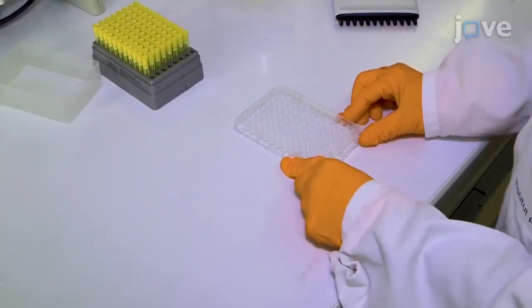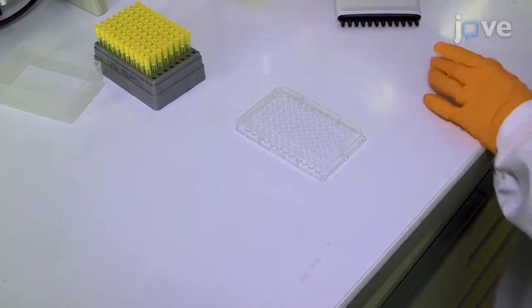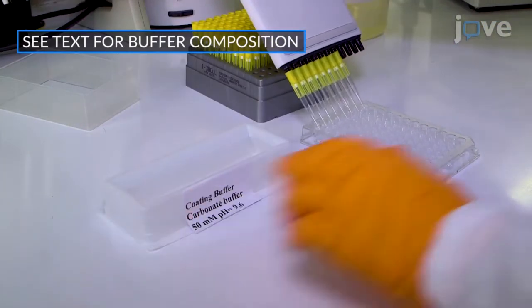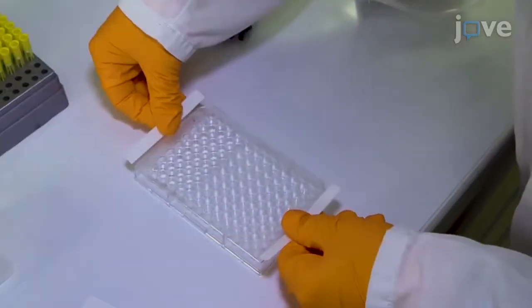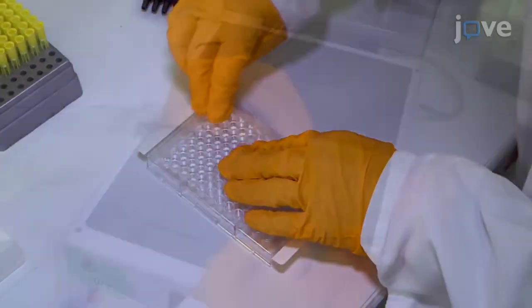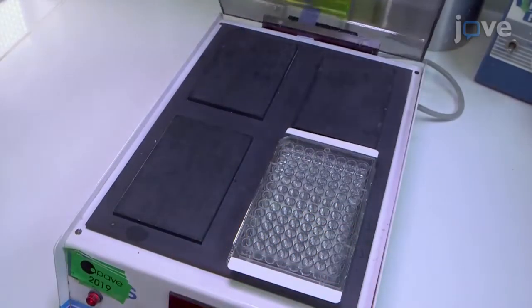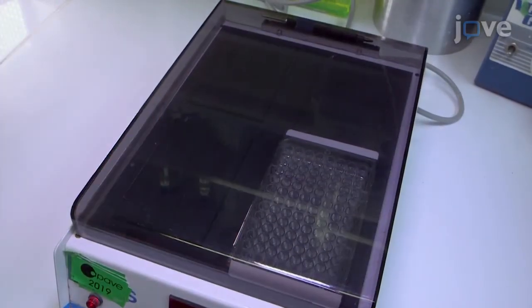Next, set out a 96-well immunoassay plate and add 200 microliters of the monoclonal antibody diluted in the carbonate buffer to each well. Cover the plate with adhesive film and incubate the microplate at 37 degrees Celsius for 3 hours in a humidified environment.